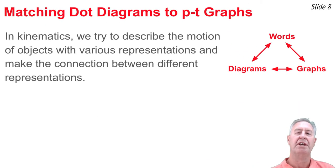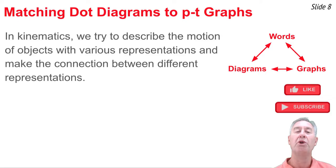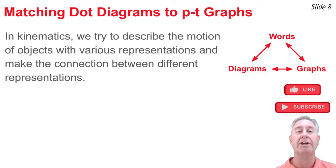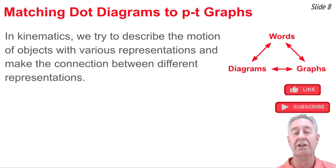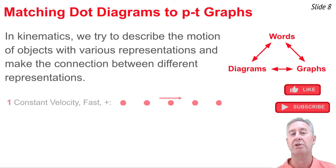We're several videos into our kinematics tutorial series, and one thing we've discussed is that there are multiple ways to represent the motion of objects — words, diagrams, graphs, data tables, and in the future, equations and formulas. One of the biggest skills you need is to associate one method with another — one representation with another representation.